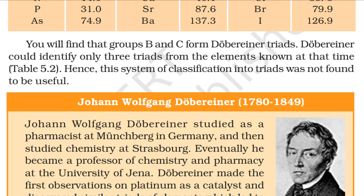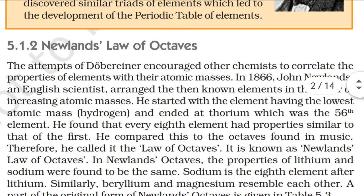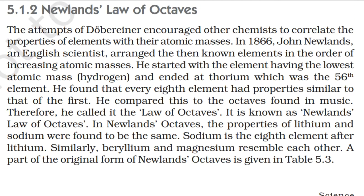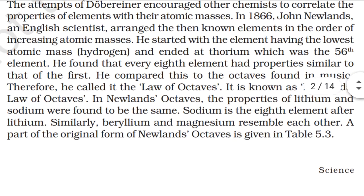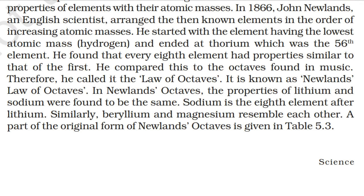Dobereiner could identify only three triads from the elements known at that time, hence this system of classification into triads was not found to be useful. Newlands' Law of Octaves: The attempts of Dobereiner encouraged other chemists to correlate the properties of elements with their atomic masses. In 1866, John Newlands, an English chemist, arranged the then known elements in the order of increasing atomic masses, starting with hydrogen and ending at thorium, the 56th element. He found that every eighth element had properties similar to that of the first, and compared this to the octaves found in music — therefore he called it the Law of Octaves.